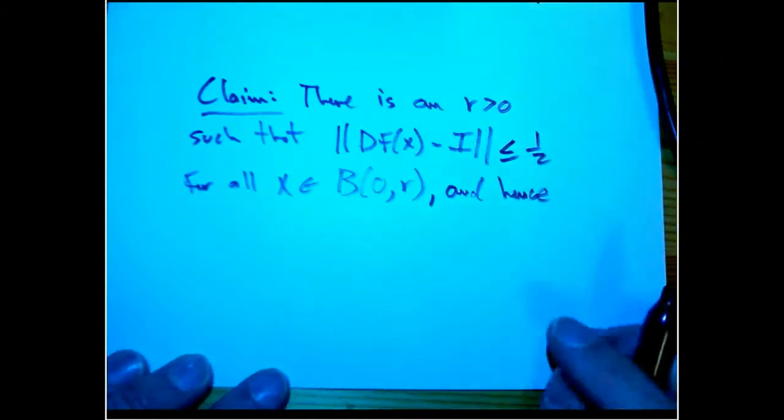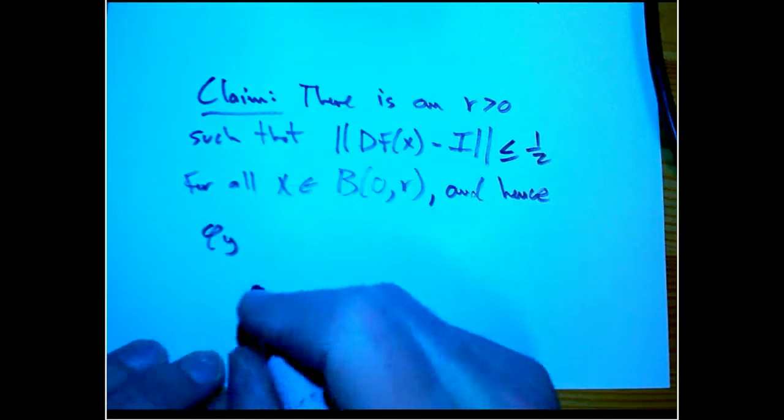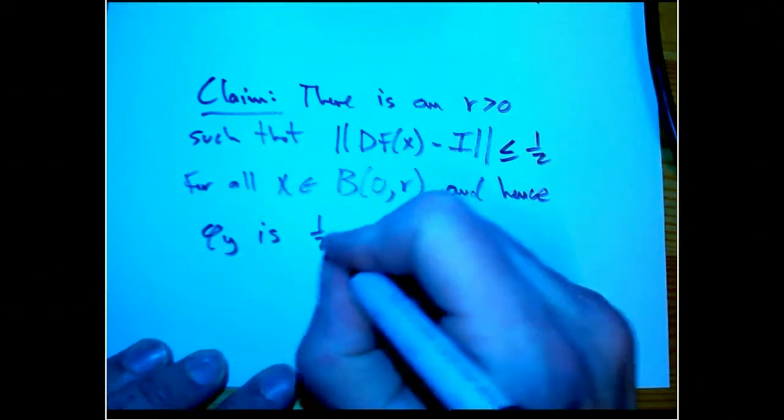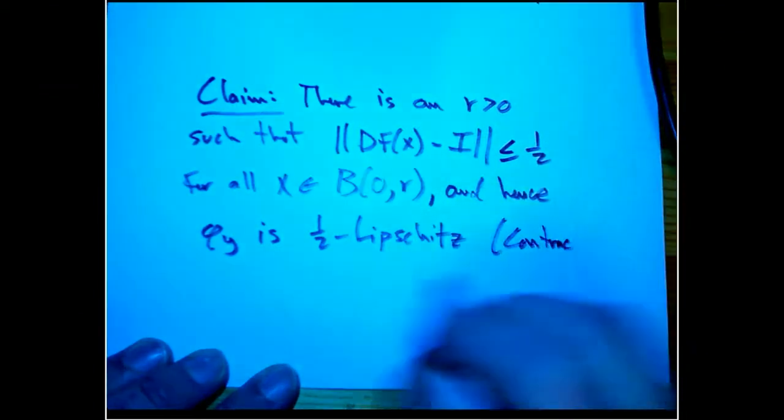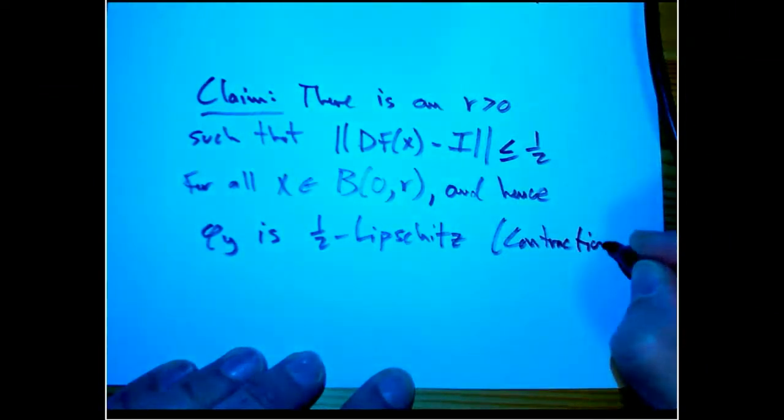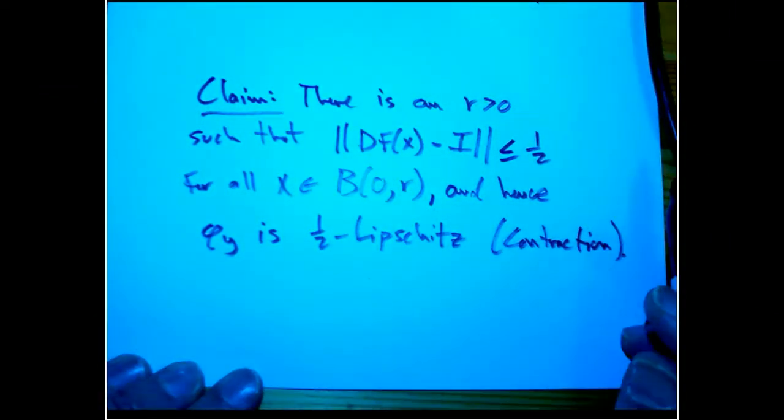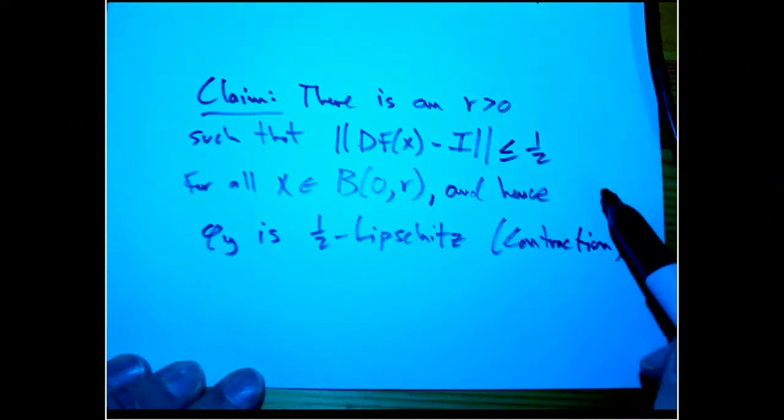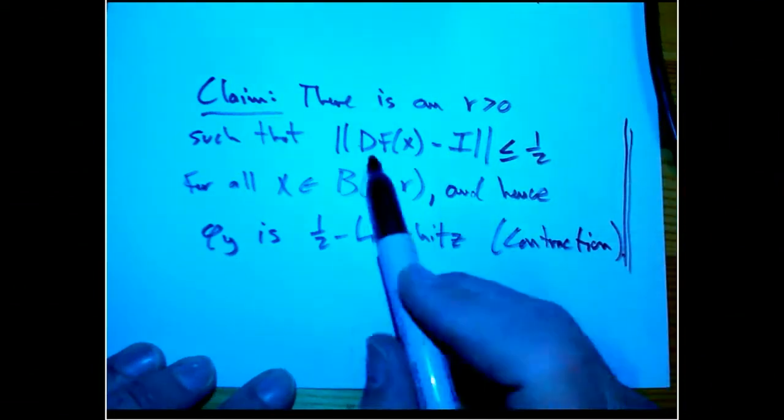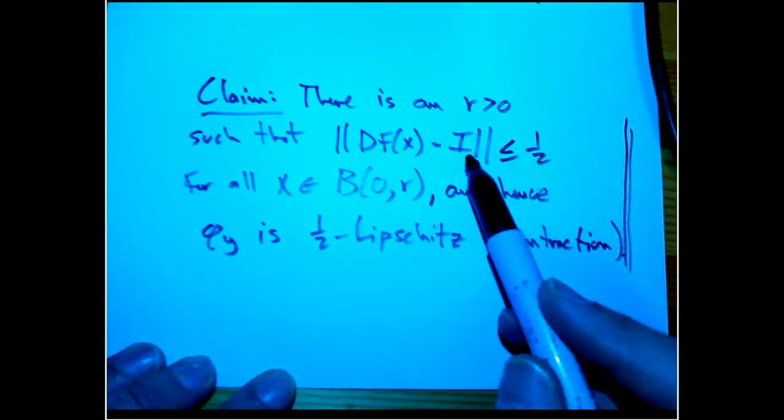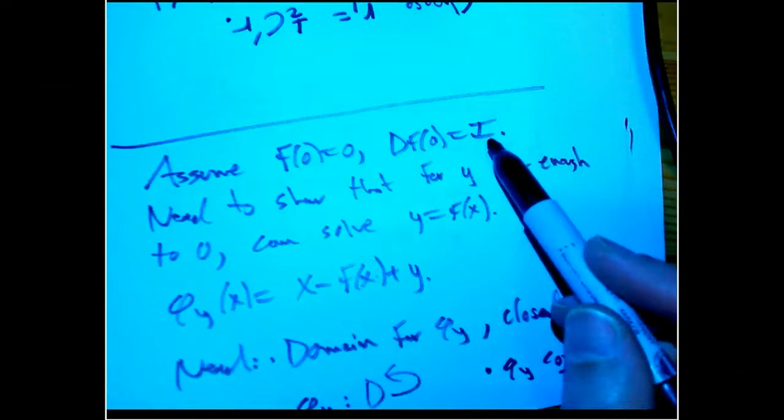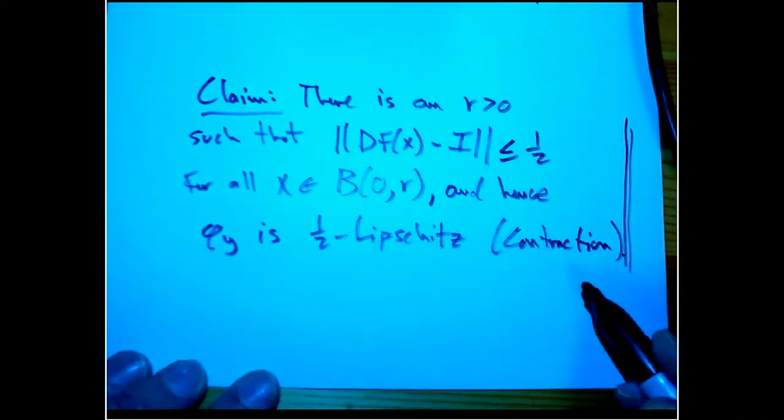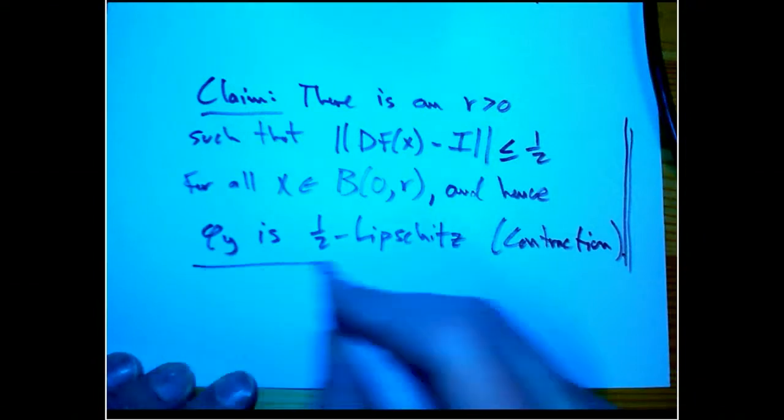And hence by everybody's favorite fundamental result in calculus, φ_y is one-half Lipschitz. Lipschitz with Lipschitz constant one-half. In other words, it's a contraction mapping. And the main thing is that's less than one. But it's just easy, just pick any number that you like less than one, one-half is the easiest one. The hint here is you really do need to know that f is c1 here, not just differentiable. But then when you walk away from x_0, remember we know that at zero the derivative is the identity map. We need to know when you walk away from that it doesn't change radically. That's the c1 condition. So φ_y is a contraction mapping.